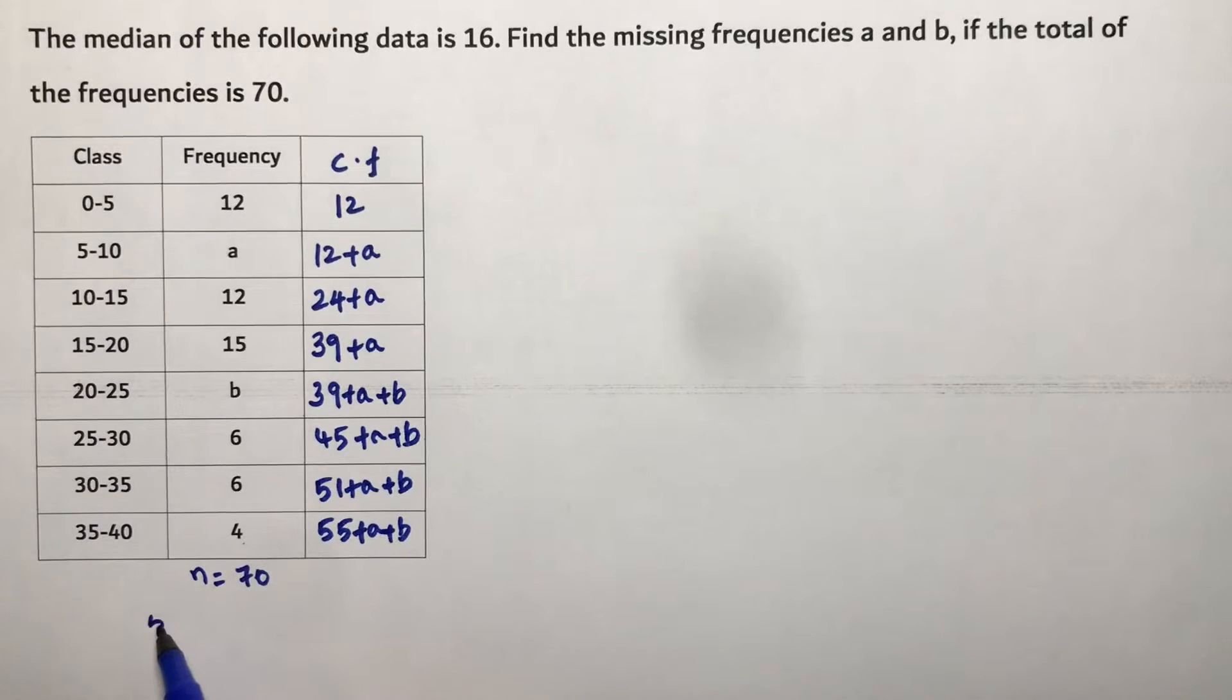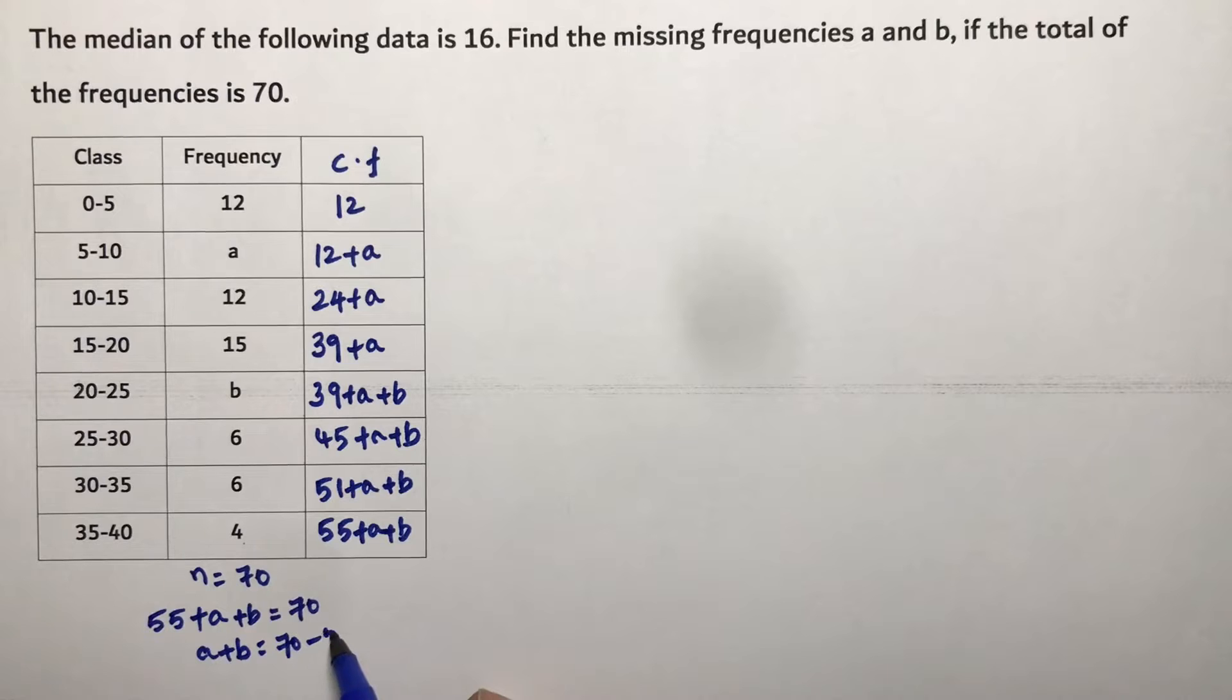Now here total frequency, if you add all this you'll get 55 plus a plus b which is nothing but 70. So a plus b is 70 minus 55. So here a plus b value is 15.